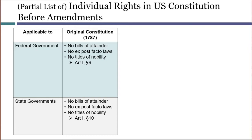The best way to understand incorporation is to track the changes in the Constitution's text in roughly chronological order. When first written and ratified, the U.S. Constitution had only a few passages that unambiguously created individual rights. These were found in Article I Section 9, which limited the federal government, and Article I Section 10, which limited state governments.